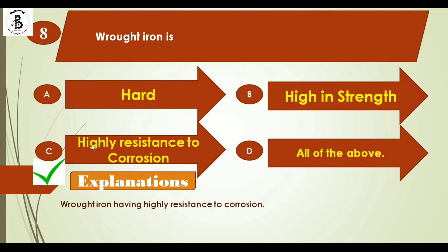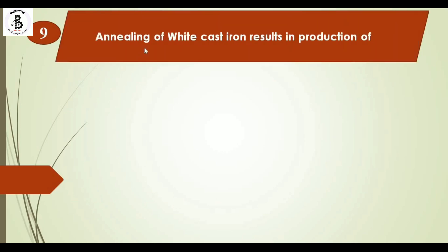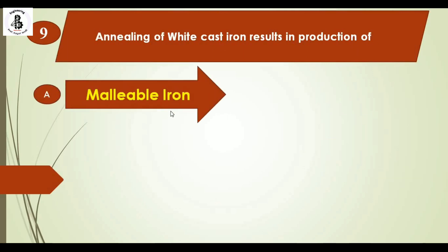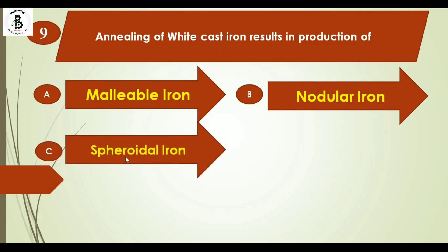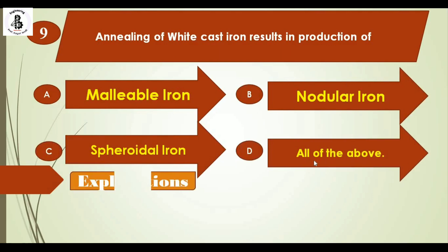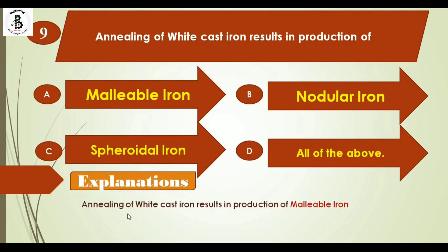Annealing of white cast iron results in the production of: option A malleable iron, option B nodular iron, option C spheroidal iron, and option D all of the above. Annealing of white cast iron results in the production of malleable iron. The right answer is option A.